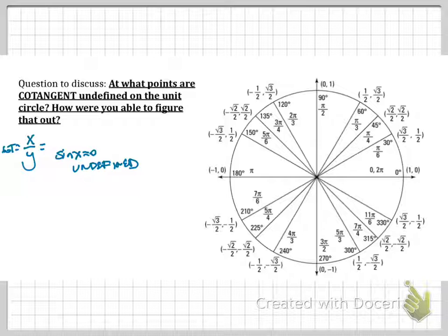So we're looking for when our y values are 0. So our y values tend to be 0 at this point here and also this point here. So those points are at 0 radians, at π radians, at 2π radians, and so forth.